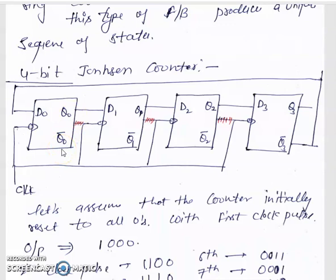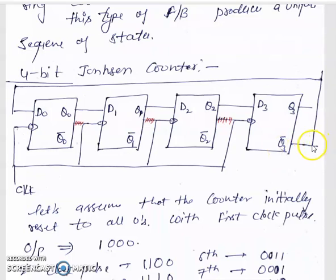This is a synchronous type counter, so the clock is applied at the same time to all the flip-flops — using a negative-edge trigger clock simultaneously to all flip-flops. The Q-bar of the last flip-flop — that is the inverted output — is fed back through the feedback loop to the input of the first flip-flop, D0.